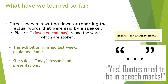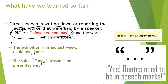What have we learnt so far? We learnt about direct speech. Direct speech is writing down or reporting the actual words that were said by a speaker. You have to place the inverted commas around the words which are spoken. Example: 'The exhibition finished last week,' explained James. She said, 'Today's lesson is on presentation.' After 'she said,' place a comma, then put the inverted commas before starting the direct speech, and close the inverted commas with the full stop. He said, 'You have won the lottery.'